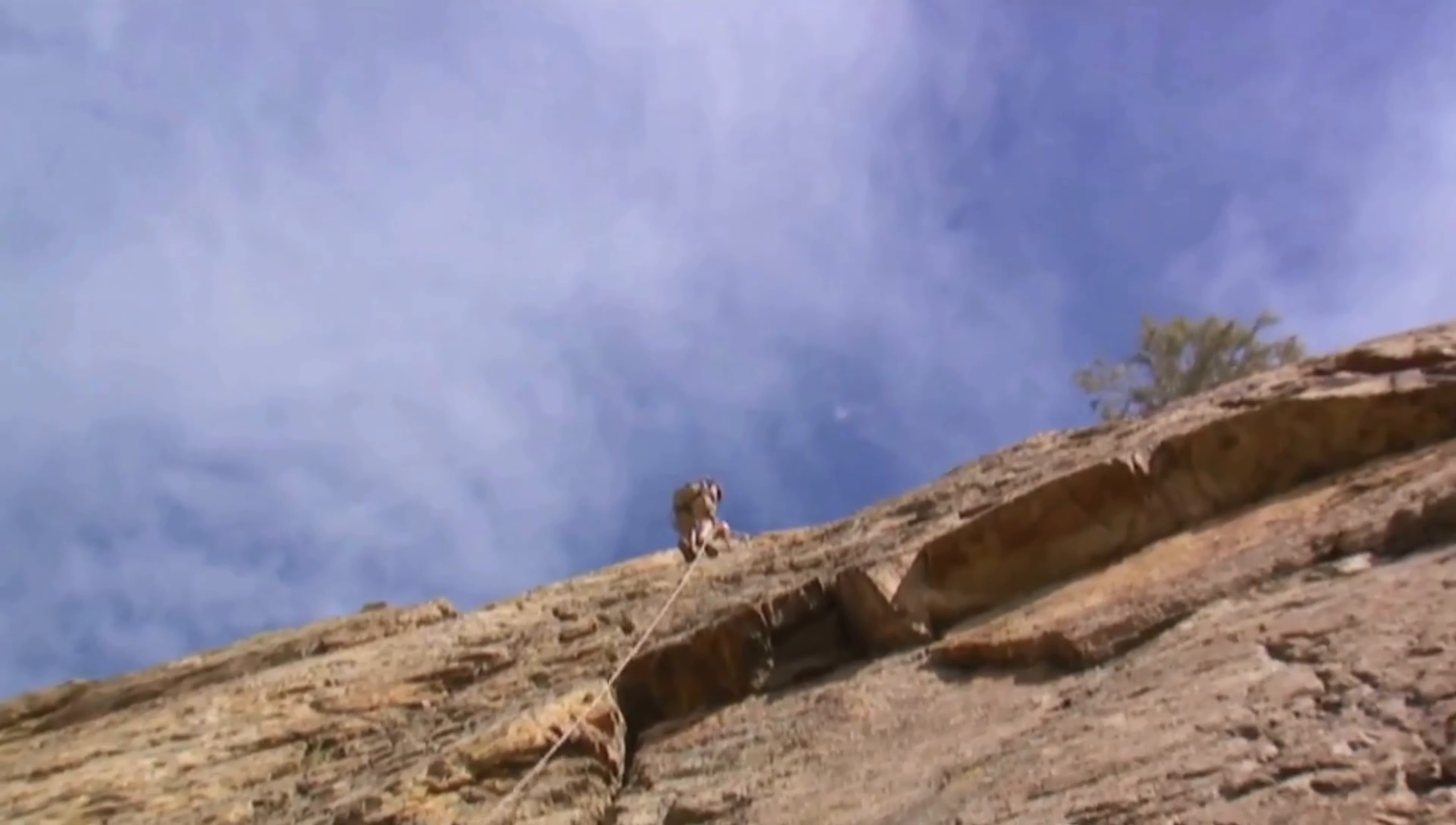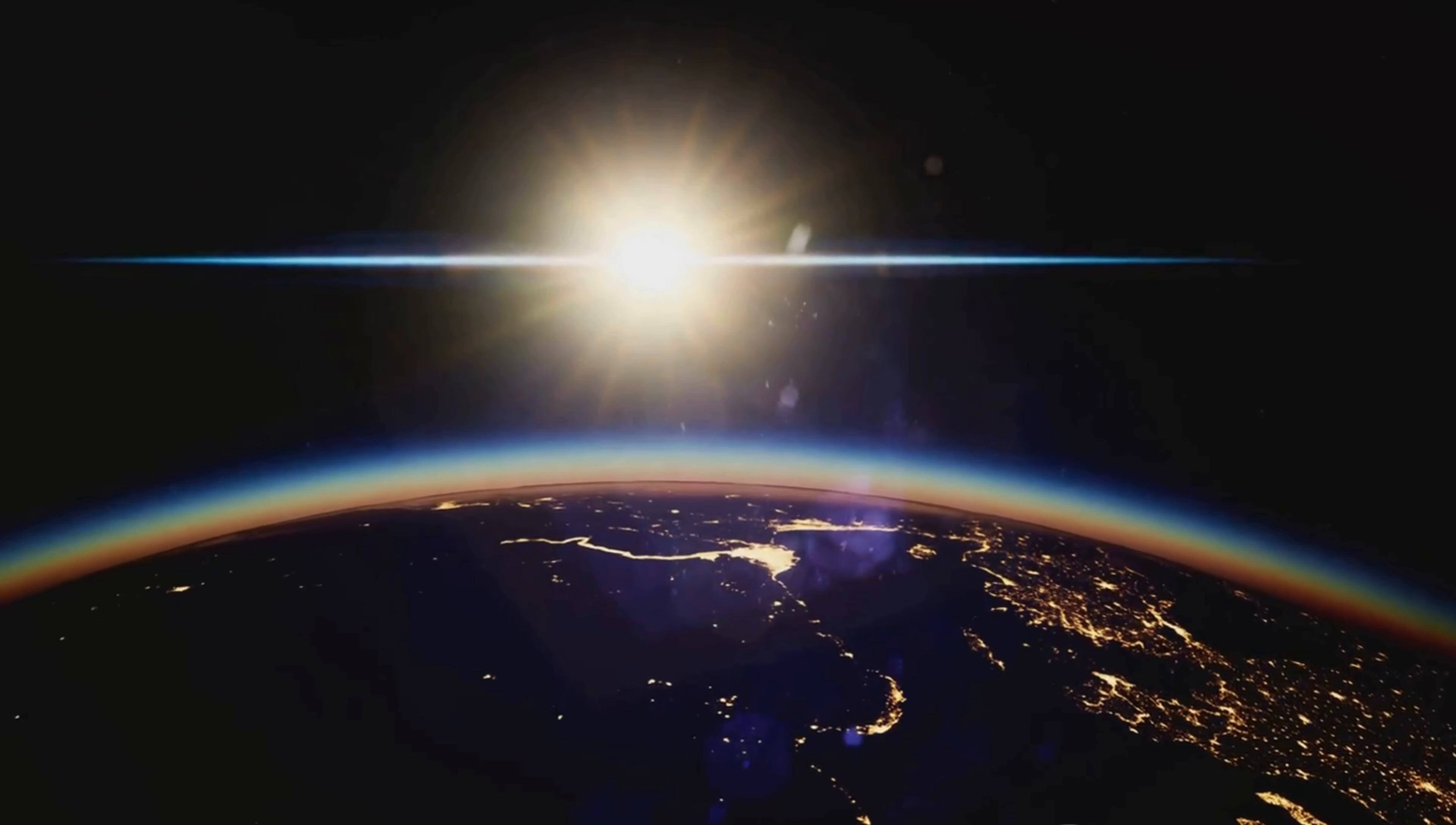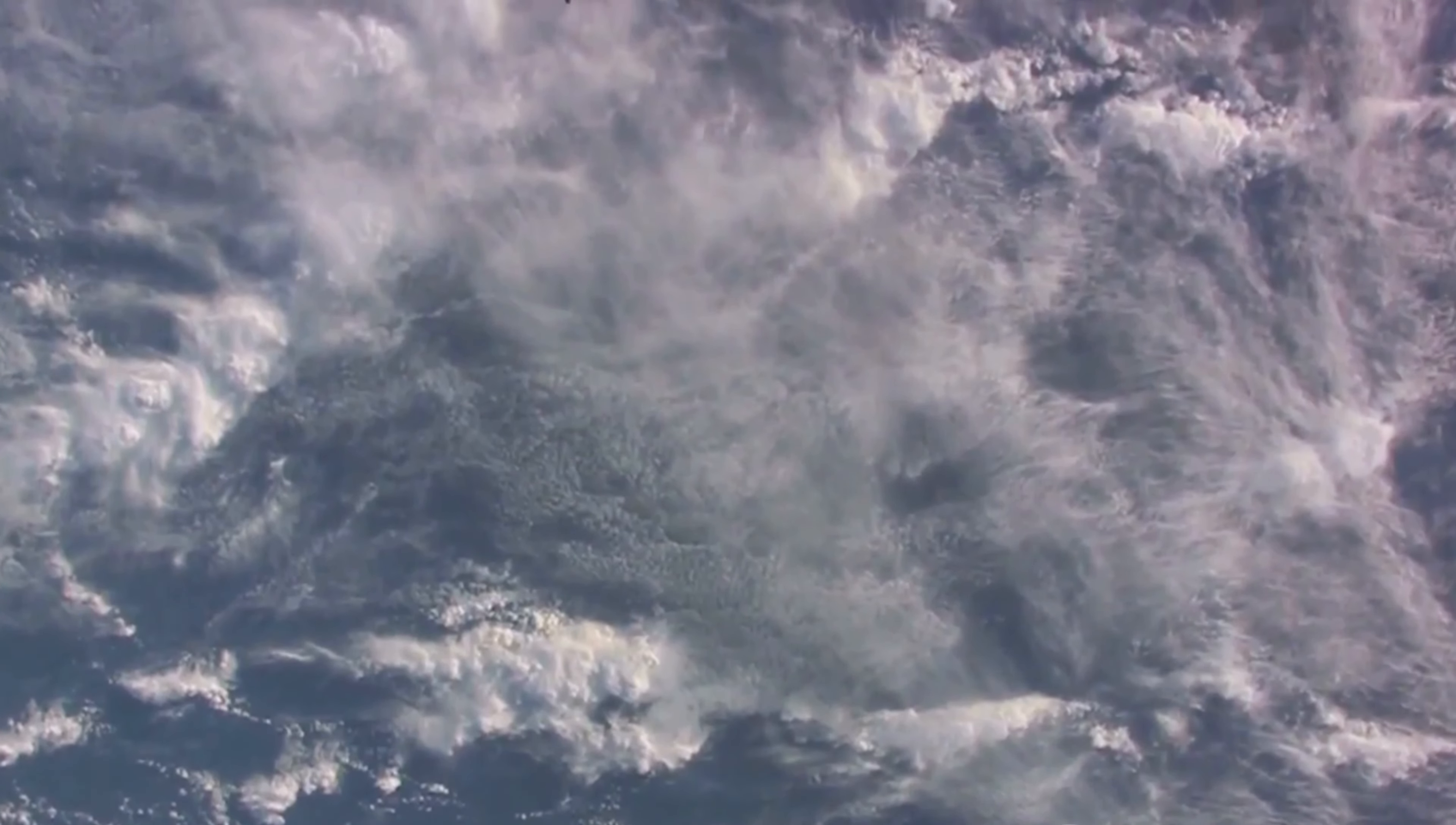Another fascinating aspect to consider is the climate. On a spherical Earth, the climate is determined by the angle at which sunlight hits the surface. However, on a flat Earth, the sun would either have to be very close and small, or its light would have to bend in unusual ways. This could result in a planet with a single uniform climate, or perhaps a world with wildly unpredictable weather patterns.